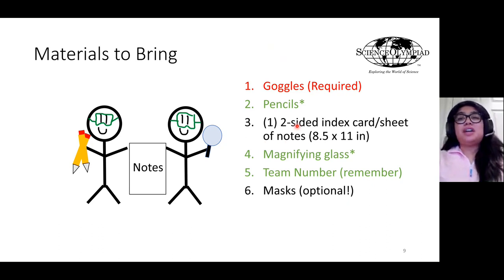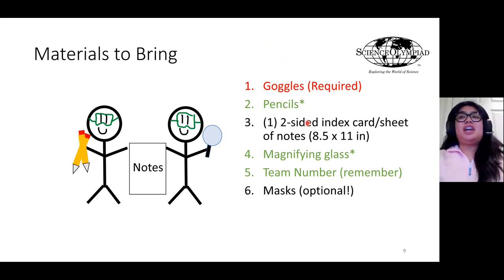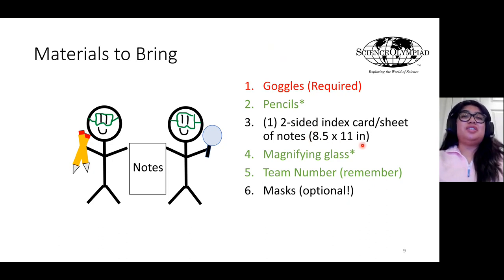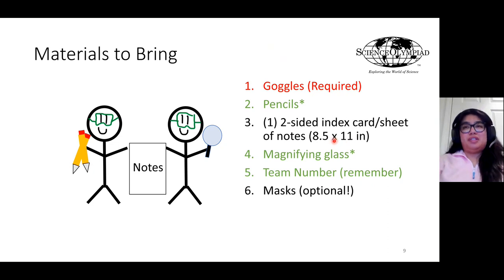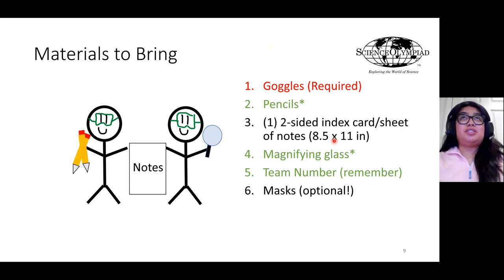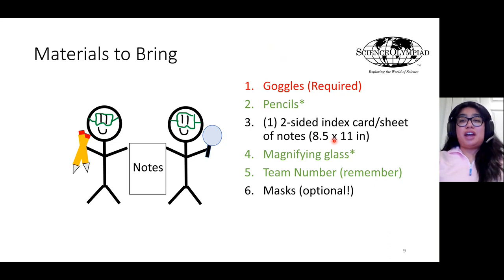Students are allotted a two-sided, one sheet of notes or one index card. The maximum size of this cheat sheet will be 8.5 by 11 inches. You can write down information to help them answer the powder section, the chromatography section, or the print section. Just make sure it is either written out or typed within those size limits.